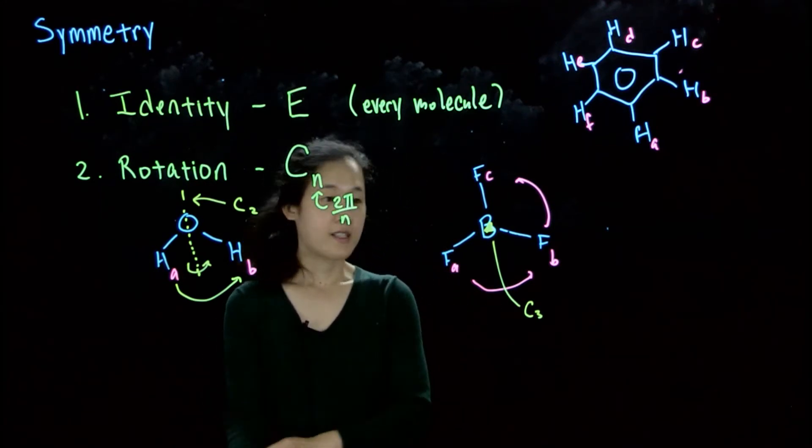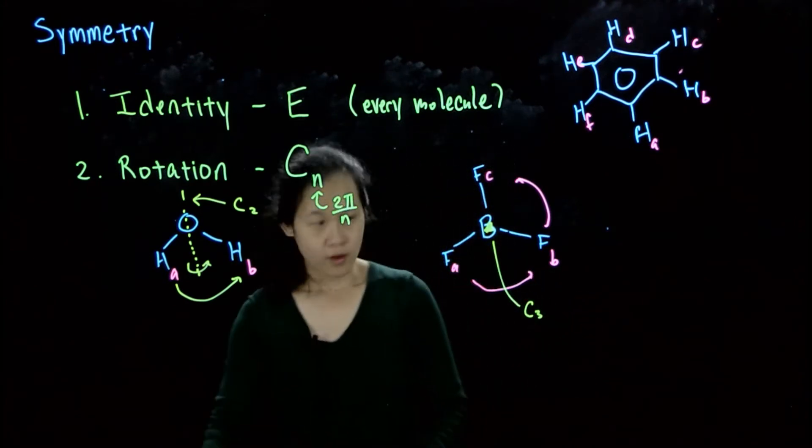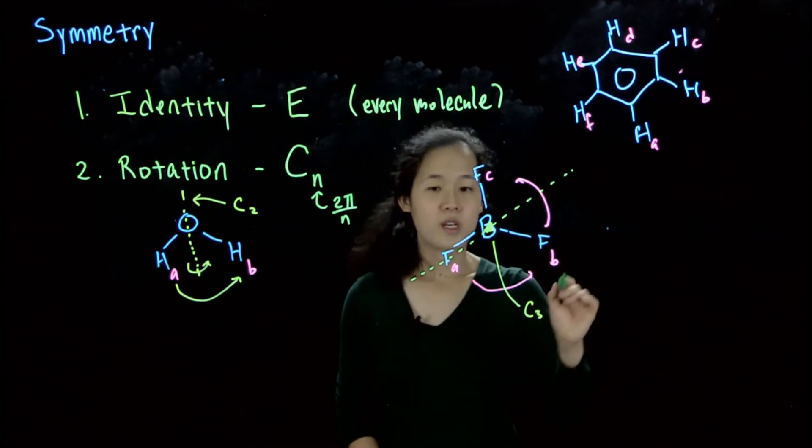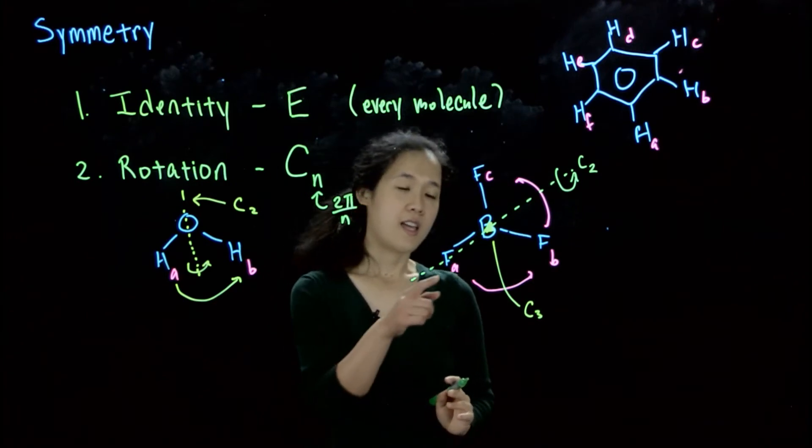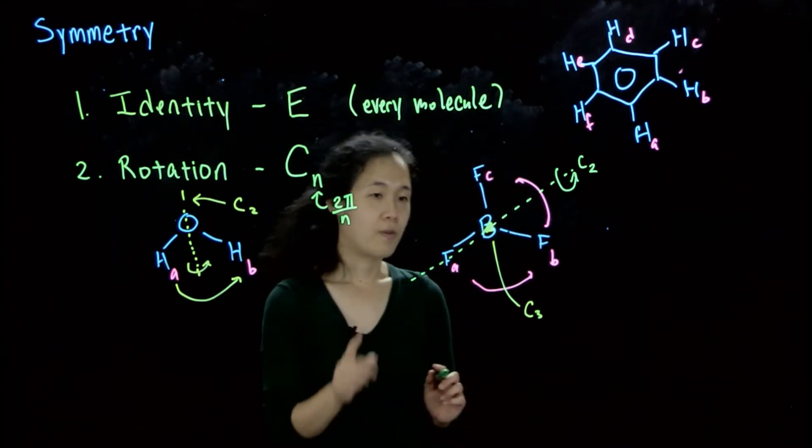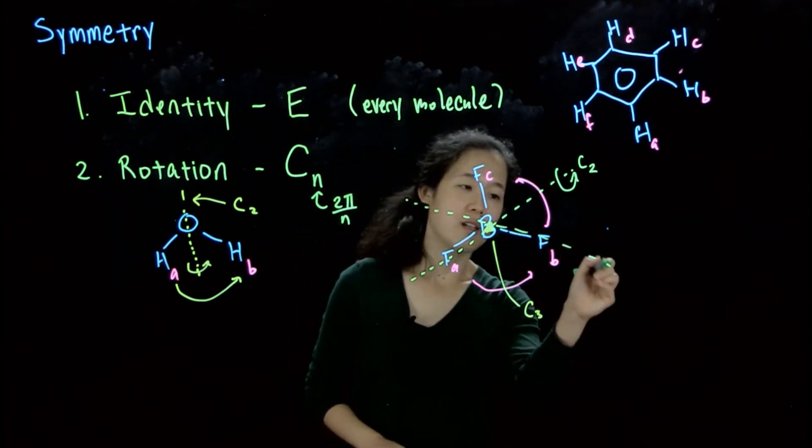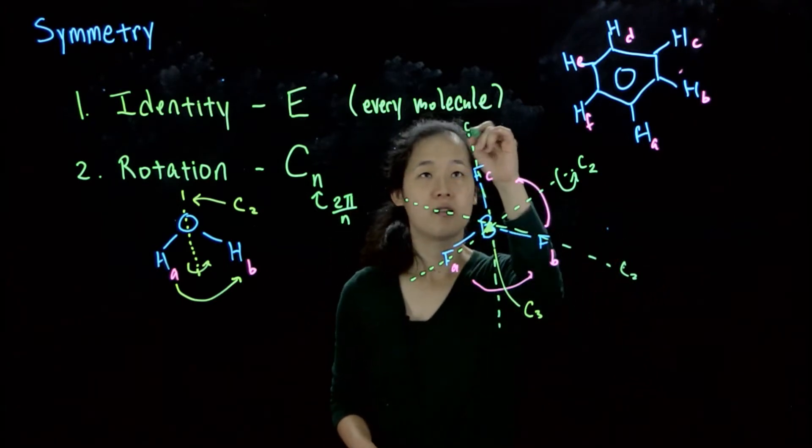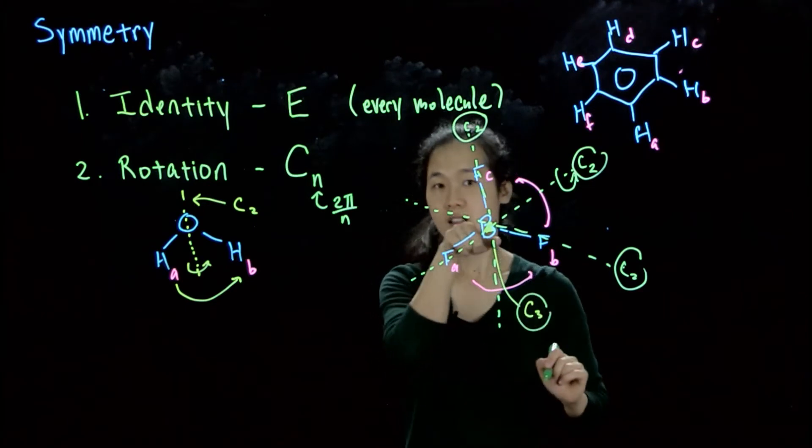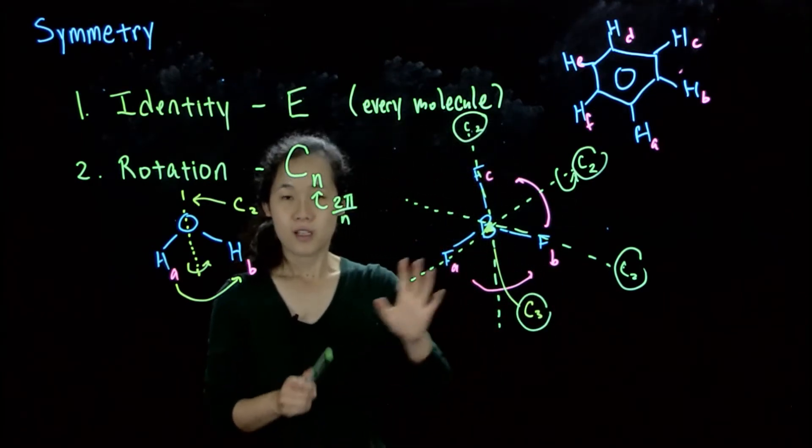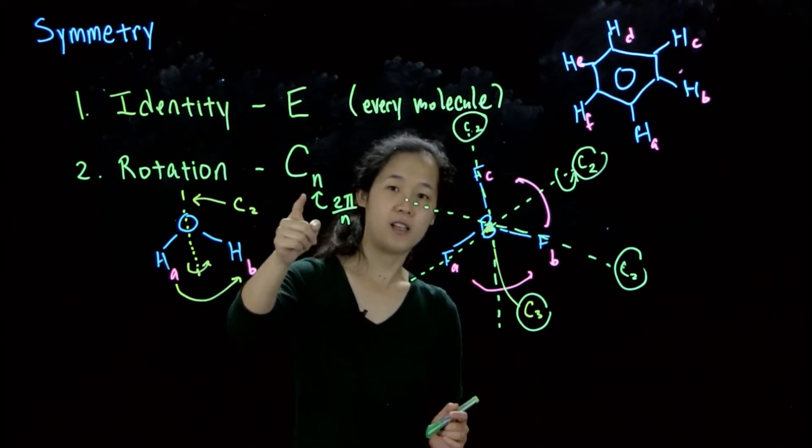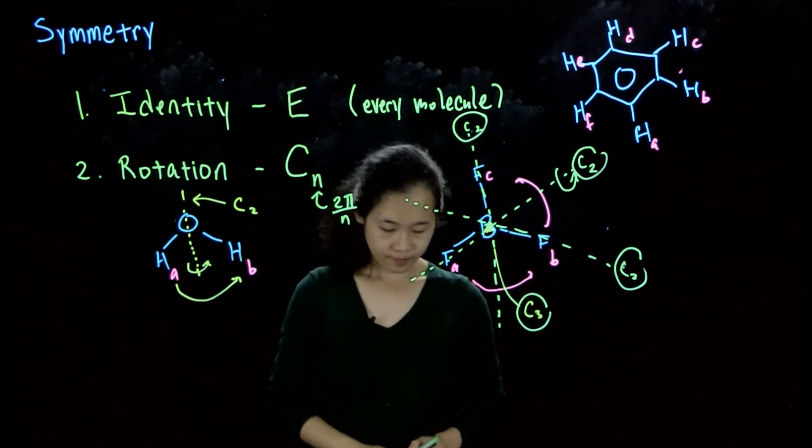I'll also point out one thing is boron trifluoride has other rotational axes too. For example, you could then think about, let me draw this in green. So if we were to think about this axis, we could do a C2 about this axis. And so FA would stay in the same spot, B would stay in the same spot, and FB would then rotate into FC and vice versa. So boron trifluoride actually has three C2 axes. So overall, we have one, two, three C2 axes, and then one C3 axis into the board like that. So there can be multiple rotational symmetry elements in the same molecule. So keep your eye out for that. And these are all called a C axis. So C just means rotation. And again, N is the number of turns you need to make it all the way around to 360 degrees.